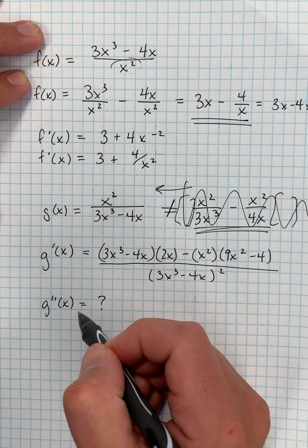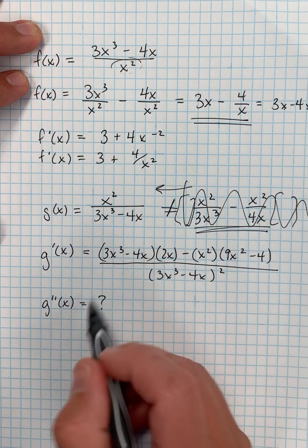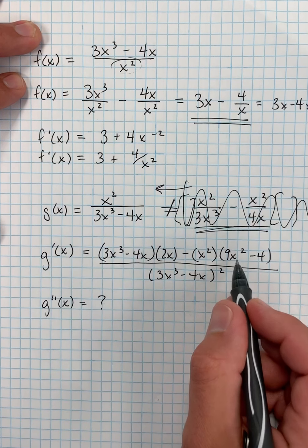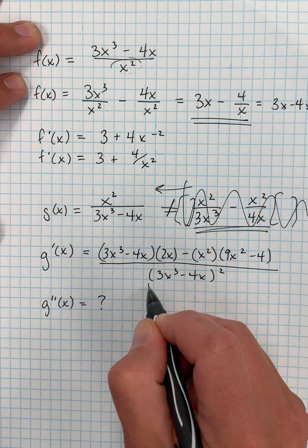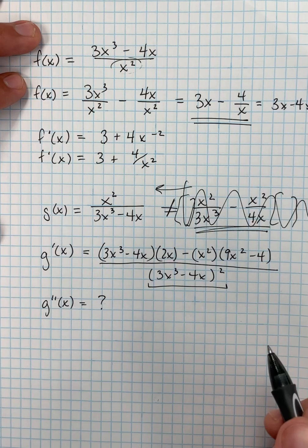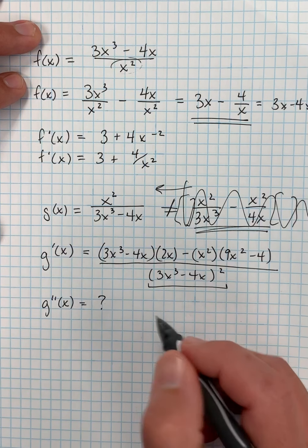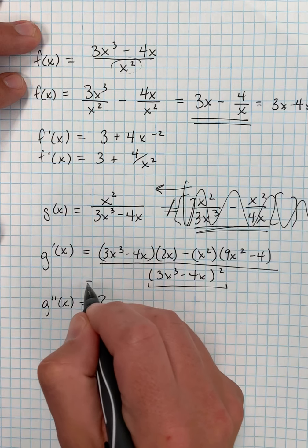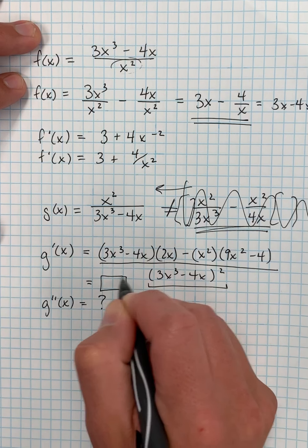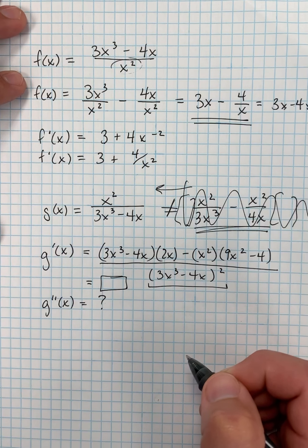If I were asked to find g double prime of x, if that was kind of on the table here, I would definitely want to take this thing and simplify it as much as I possibly could prior to taking the second derivative. Because if I jump in and try to take the derivative of this monster, I'm going to be here forever with multiple product rules inside a quotient rule with even a chain rule that you may or may not have even learned yet at this point if you're watching this video. So just be careful. Be aware. If you're going to go to the second derivative, it's always a great idea to rewrite g' into some simple form before trying to take the derivative again and find your second derivative. Thank you very much.